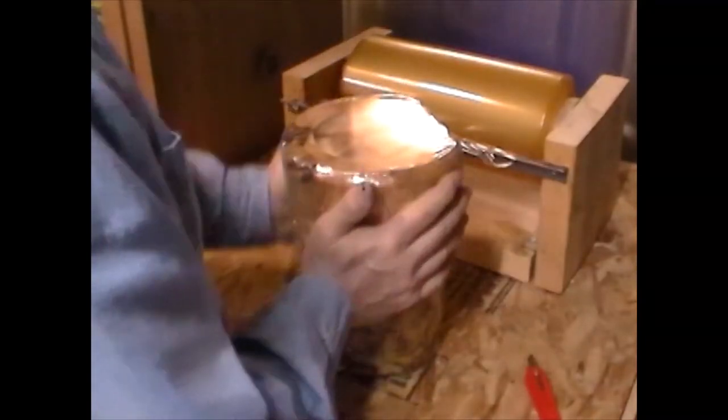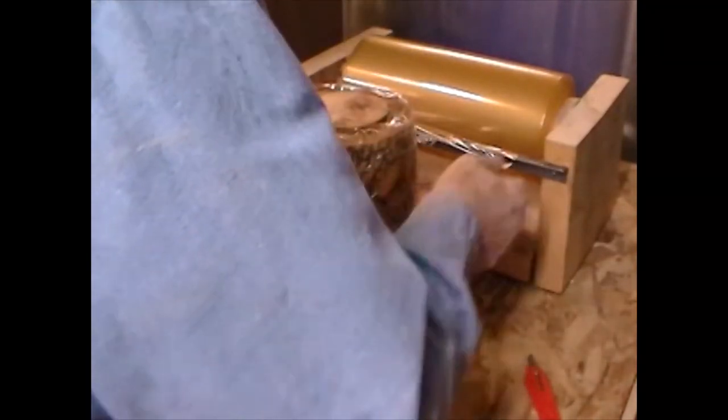This is ash wood which has a tendency to crack so I'm wrapping it in plastic to slow the drying process until I'm ready to core the bowl.